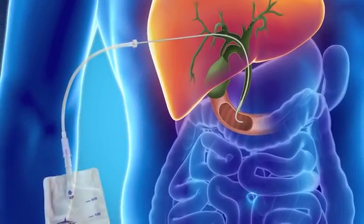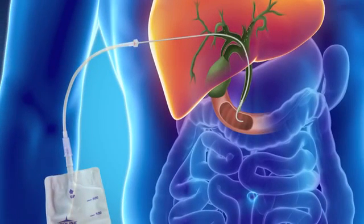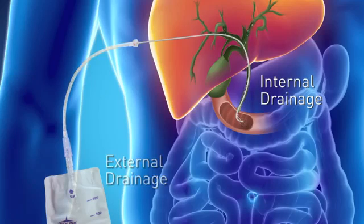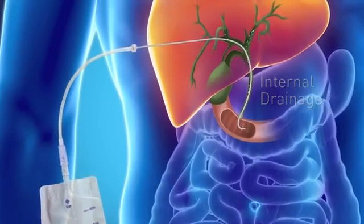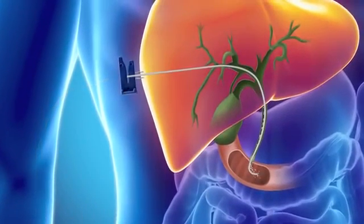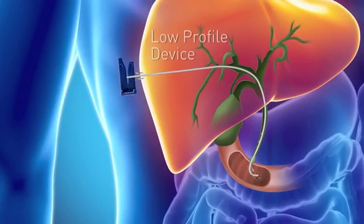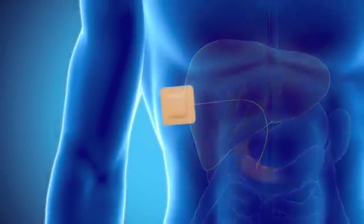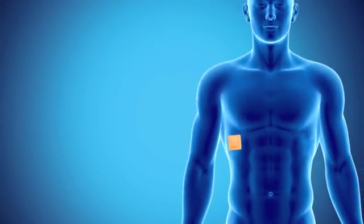When the procedure is complete, the tube will allow bile to drain externally to a bile bag. If good internal drainage can be achieved to your small intestine, a bile bag may not be necessary. In this case, a low-profile device can be applied to the external end, making the tube comfortable and discreet.